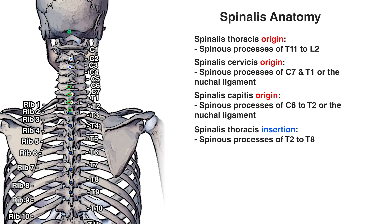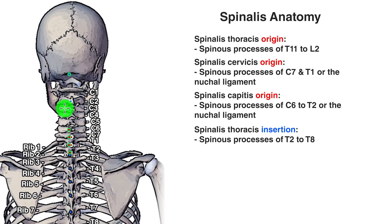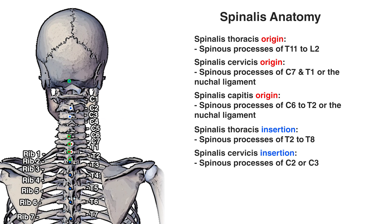Moving up to the cervicis section, you can see those insertion points with the white outline around them. The insertion points are on the spinous processes of C2 and C3.